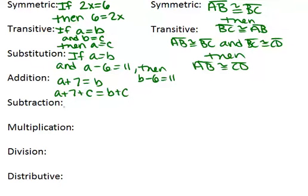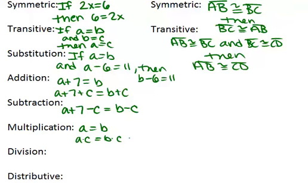Same thing with subtraction: A plus 7 minus C would equal B minus C. As long as you subtract the same thing from both sides, you're okay — that's the subtraction property of equality. Same thing for multiplication: if A equals B, then A times C will equal B times C. And with division, if A equals B, then A divided by C will equal B divided by C. You can divide both sides by the same thing.